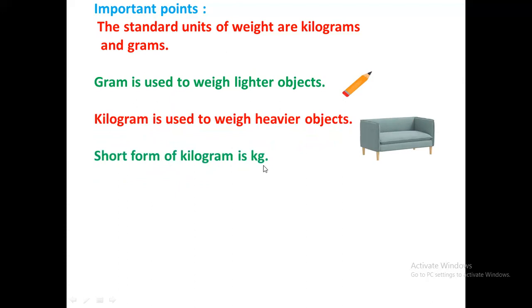Short form of kilogram is kg. K is for kilo and g is for grams. Short form of gram is small g.